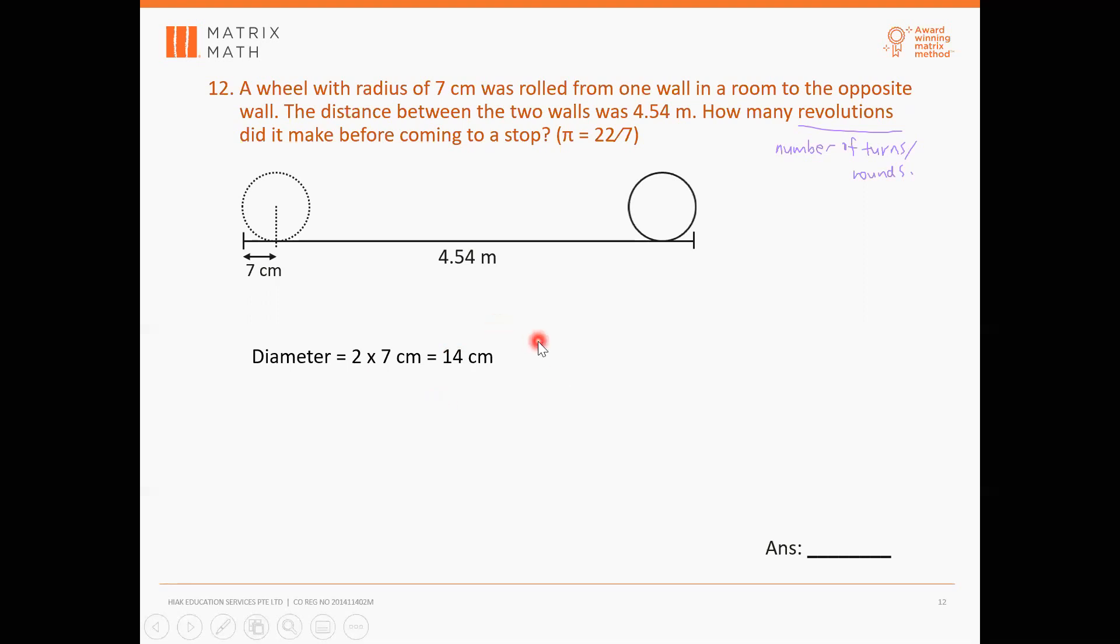So once you get the diameter, you can find what? The circumference. Very good. So what's the circumference formula? 44. What's the start that you wrote? 22 over 7 times 14. Okay, so pi times diameter. Very good.